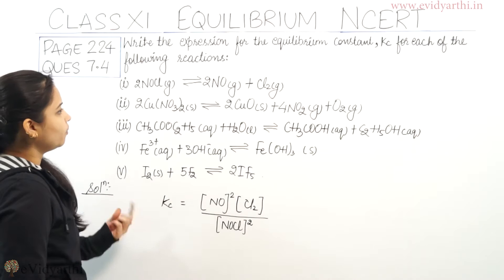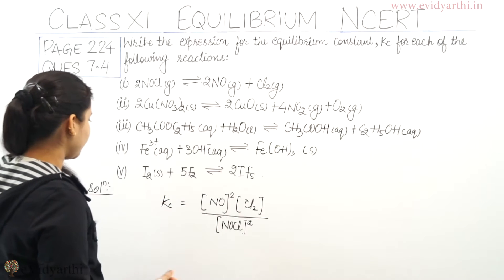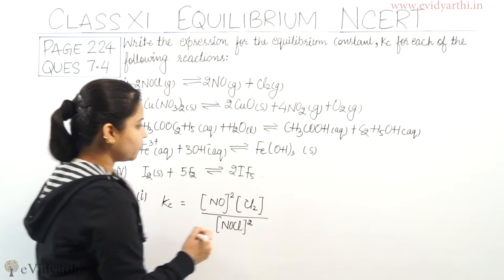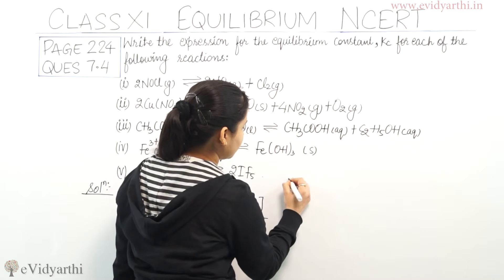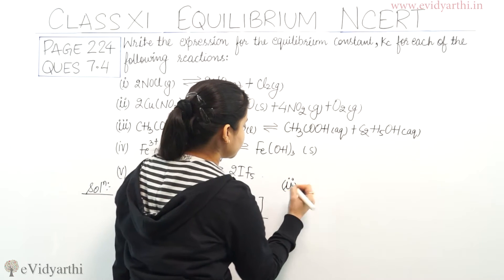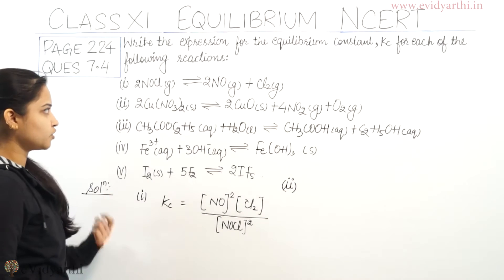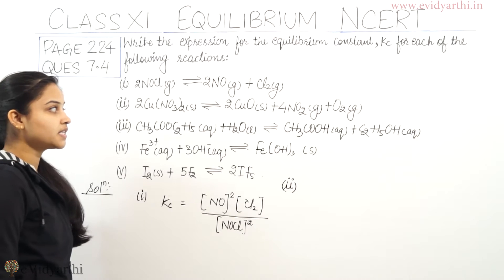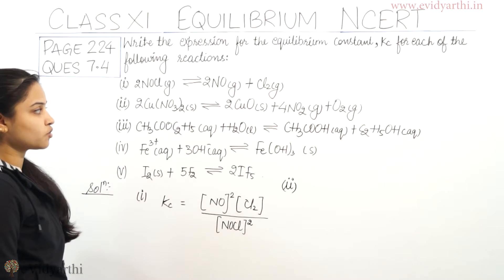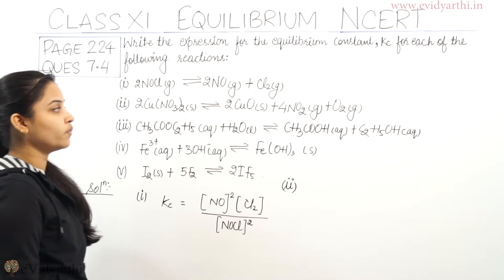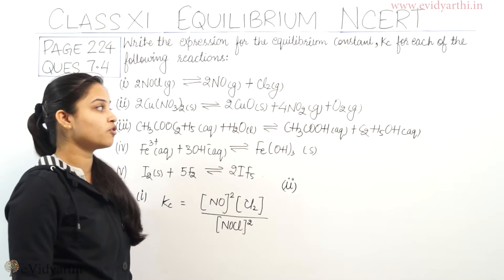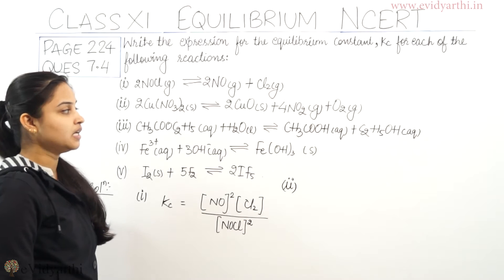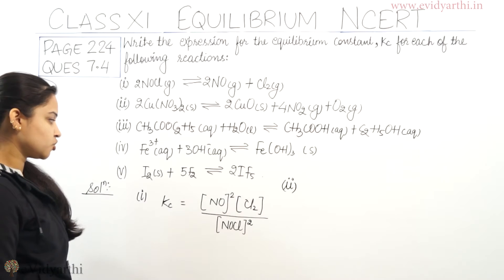Moving on to the second part of the question. The equation given to us is 2Cu(NO₃)₂ in the solid state in equilibrium with 2CuO in the solid state plus 4NO₂ in the gaseous state plus O₂ in the gaseous state.